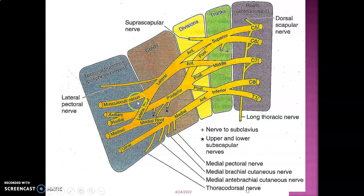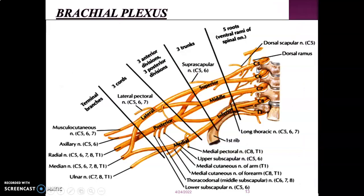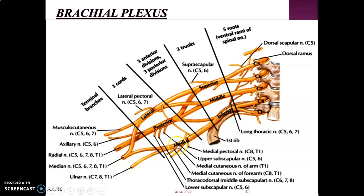To recap the formation: C5 and C6 form the superior trunk, C7 continues as the middle trunk, C8 and T1 form the inferior trunk. All posterior divisions form the posterior cord; anterior divisions of the upper and middle trunks form the lateral cord; anterior division of the inferior trunk forms the medial cord. Branches from the lateral cord: lateral pectoral, musculocutaneous, and lateral root to median. Branches from the medial cord: medial cutaneous of arm and forearm, medial pectoral nerve, ulnar nerve, and medial branch to median nerve.